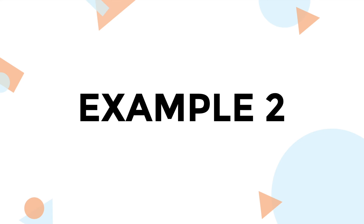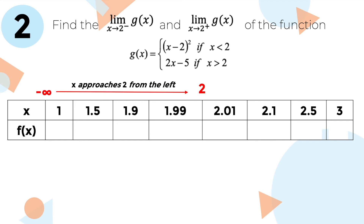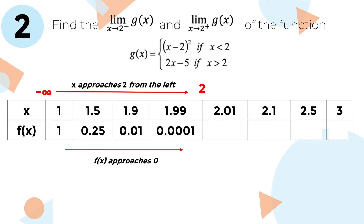Let's try another example. Let's compute for the left-hand and right-hand limit of the function: (x minus 2) squared if x is less than 2, and 2x minus 5 if x is greater than 2. First, we compute for the left-hand limit. To do so, we assign x values less than 2 — these numbers are 1, 1.5, 1.9, and 1.99. Evaluating the function using these values, we can see that f(x) approaches 0. Therefore, the left-hand limit of the function is 0.